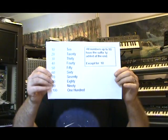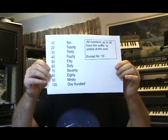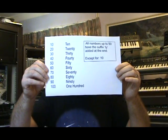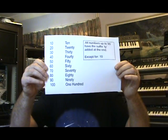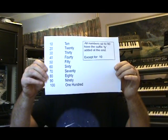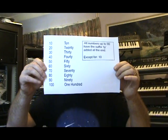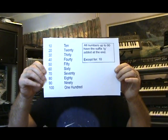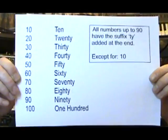The reason I think number 10 should be called 1T is because if we look at counting in tens, we have 10, 20, 30, 40, 50, 60, 70, 80, 90, and excluding 100, the only one that doesn't end in '-ty' is 10.